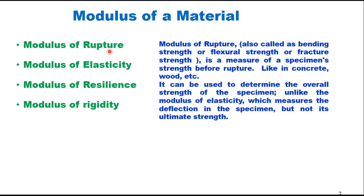There is a difference between the modulus of rupture and modulus of elasticity. In the case of modulus of elasticity, we measure the deflection in the specimen but we do not measure its ultimate strength. Whereas in the case of modulus of rupture, it is the strength before rupture.